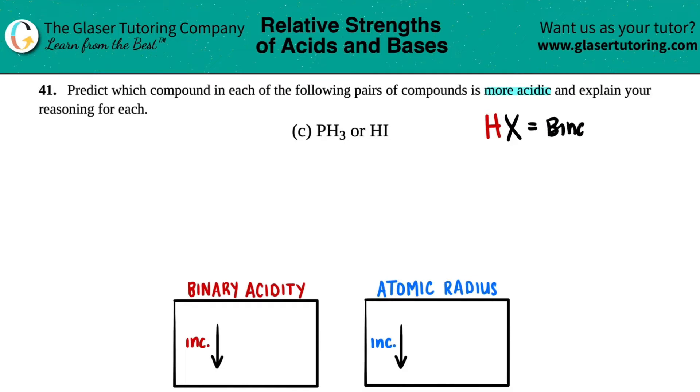So this one is a binary acid. It does not matter whether you have H2 or H3; it just matters that you have a hydrogen and another element. That's what's going on here. For PH3, I have hydrogen and phosphorus—two elements. For HI, I have hydrogen and iodine—two elements. It does not matter how many hydrogens I have for each; it's just the different letterings.